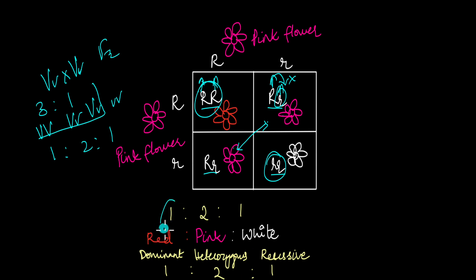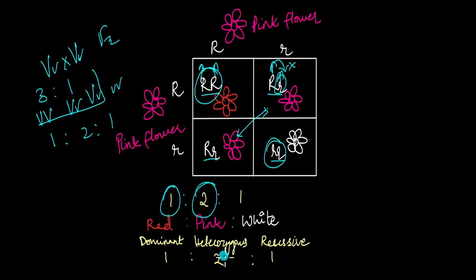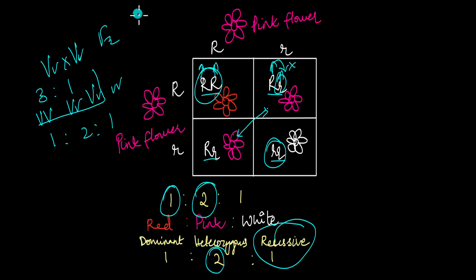You have one offspring that is red in color, which is homozygous dominant; two offspring that are pink in color, which are heterozygous; and one offspring that is white in color, which is homozygous recessive.